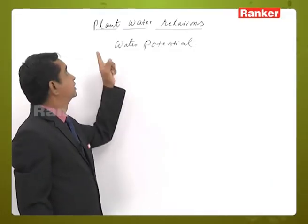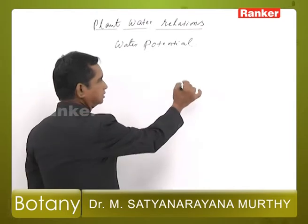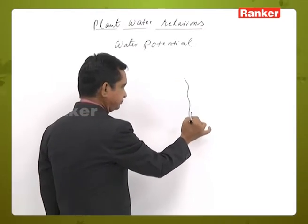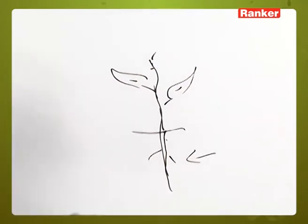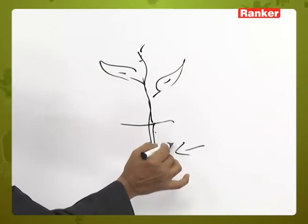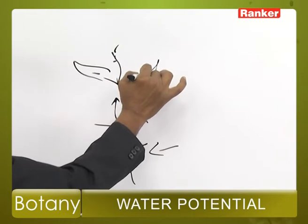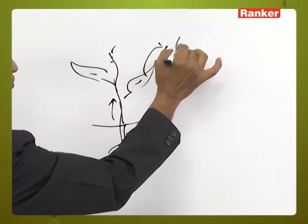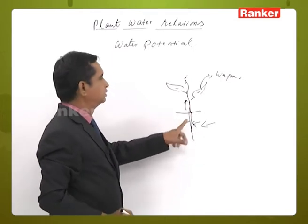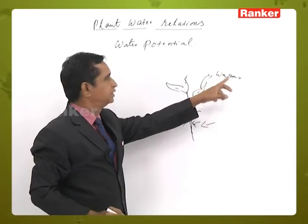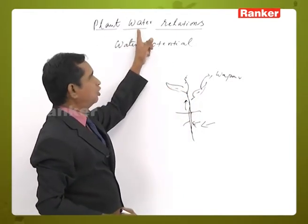Our topic is plant water relations. When the plant absorbs water from the soil, the water goes into the root system, then it goes to the shoot system and from there into the leaves, and from the leaves it evaporates as water vapor. So from the time of entry of the water to the exit of water from the leaves in the form of water vapor, the relations of water with the plant we discuss under this topic: plant water relations.